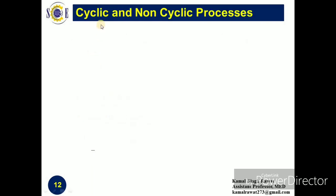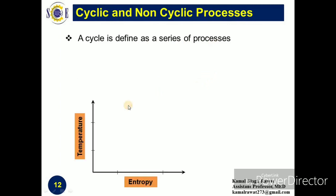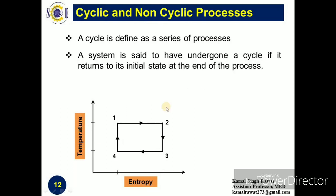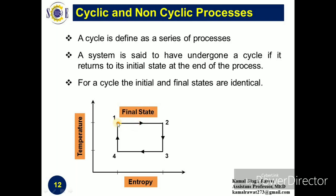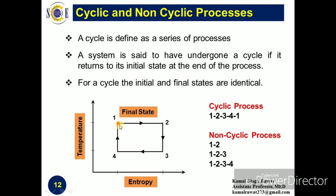Now let us move to cyclic and non-cyclic processes. A cycle is defined as a series of processes. On a temperature versus entropy diagram, we draw a series of processes such that the end state is identical to the initial state — this is a cyclic process. The process 1-2-3-4-1 is a cyclic process. However, processes such as 1-2-3 and 1-2-3-4 are non-cyclic processes, because in these the initial state and the final state are not identical.